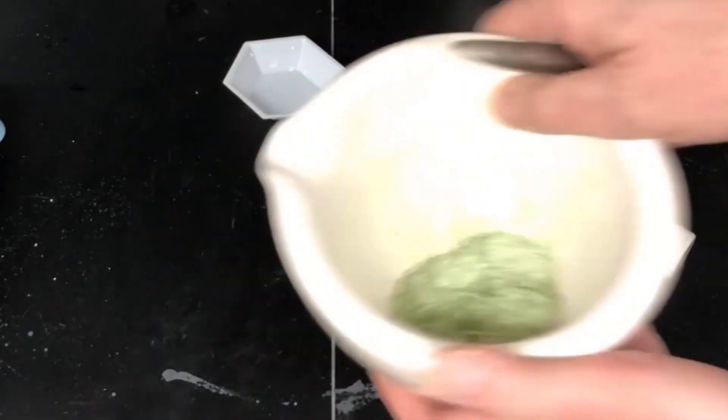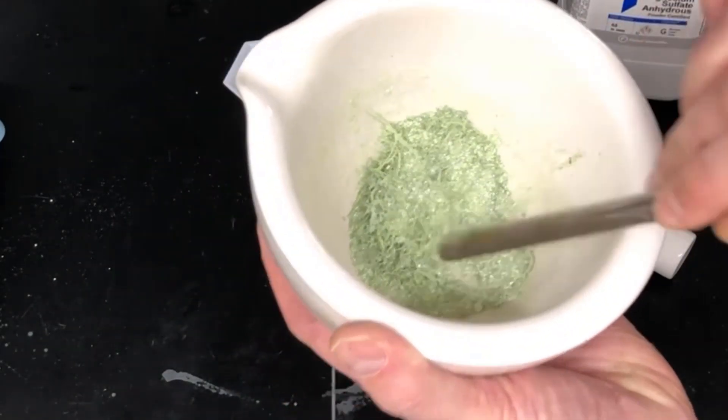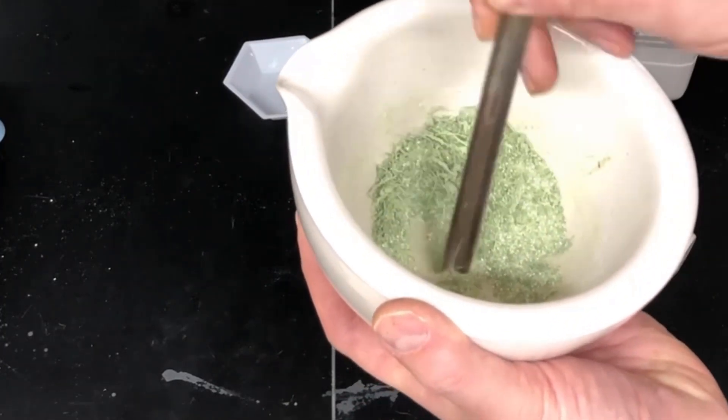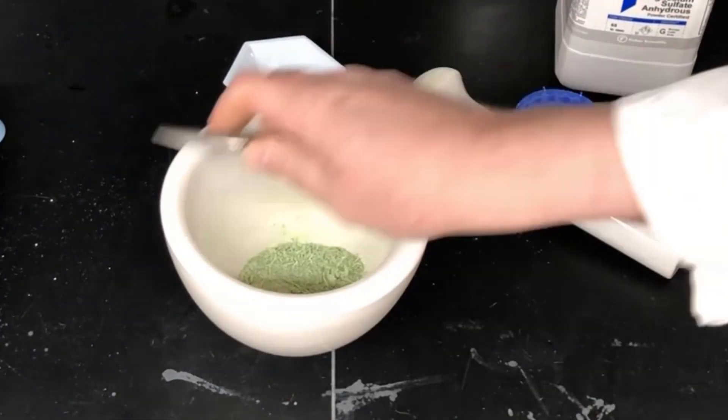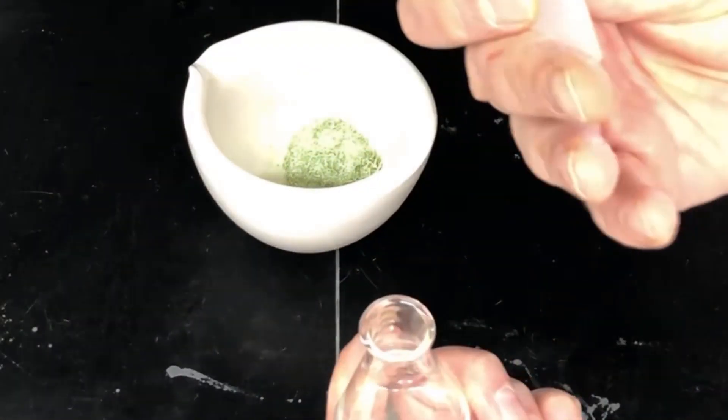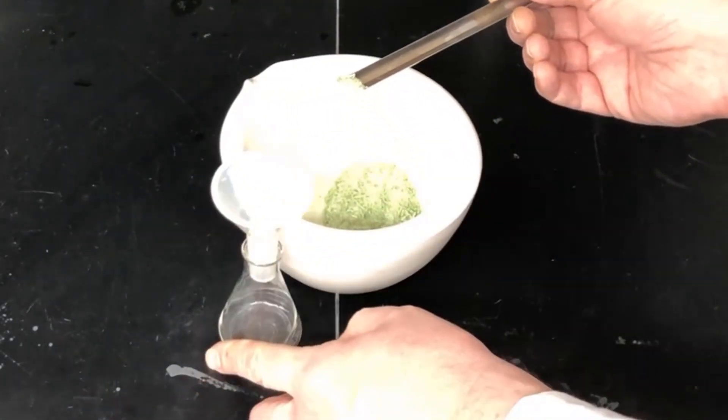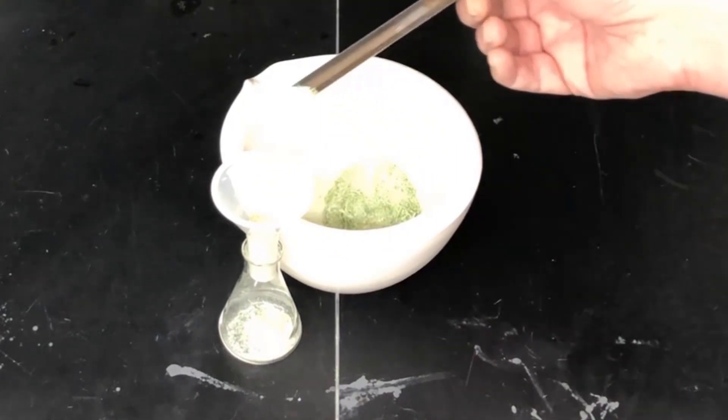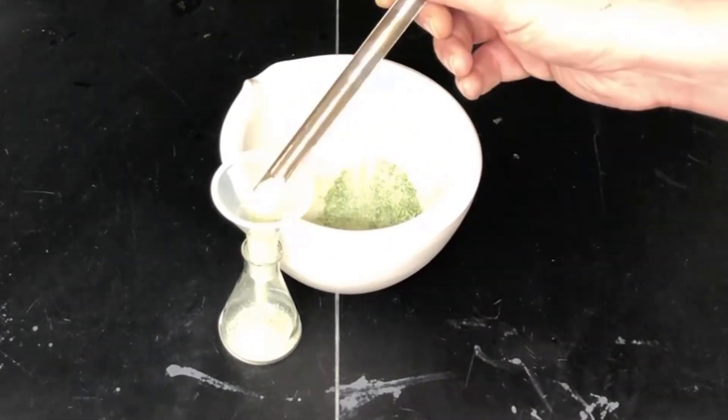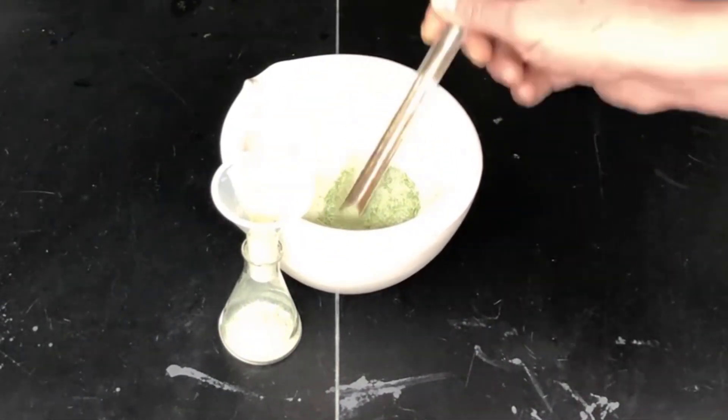And then we're going to move this stuff and put it into an Erlenmeyer flask to extract it. So there's our Erlenmeyer flask. There's a powder funnel that we're going to put on there that's going to help us get the powder into the Erlenmeyer flask. And you can do this however you like. I'm using a spatula to move most of it in.